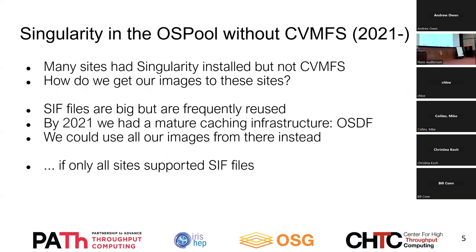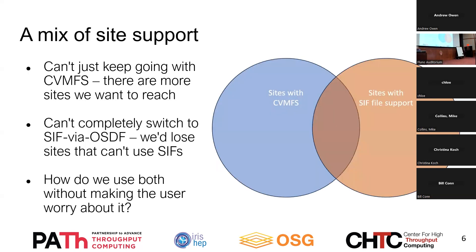But by 2021, there were a ton of sites that had Singularity but we had no way of using it because we couldn't get our images to those sites since they didn't have CVMFS. By 2021, we also had a mature caching infrastructure — OSDF, though at the time I think we were still calling it Stash Cache. So maybe it was time to revisit the use of SIF files, since it could solve the transfer problems. But we still had the problem that not all sites supported SIF files. This gave us essentially a Venn diagram of sites: some could get our images via CVMFS, some could get them through OSDF and run SIF files, some could do both, but we had to pick and choose based on where we wanted to run.